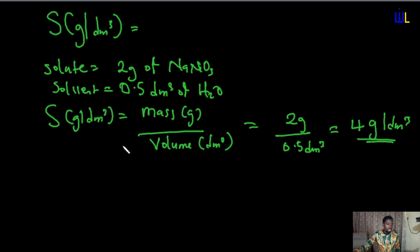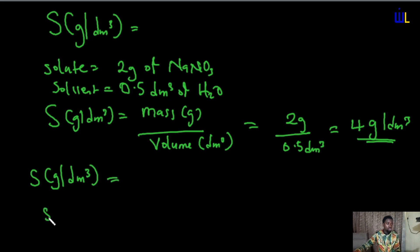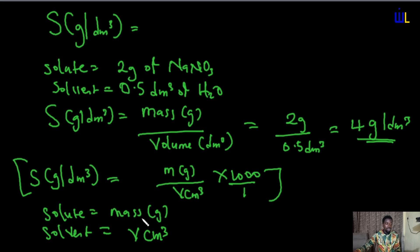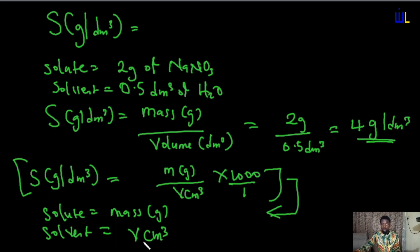Now, if solubility in gram per dm³ is expected but your solute is in mass in gram and your solvent is in volume in cm³, this is simply expressed as mass in gram of solute divided by volume in cm³, multiplied by 1000 over 1. This formula is used when the solute is in mass in gram and the solvent is in volume in cm³.